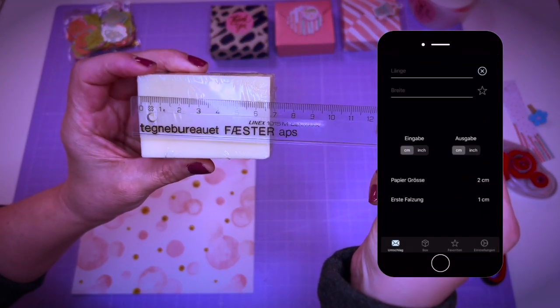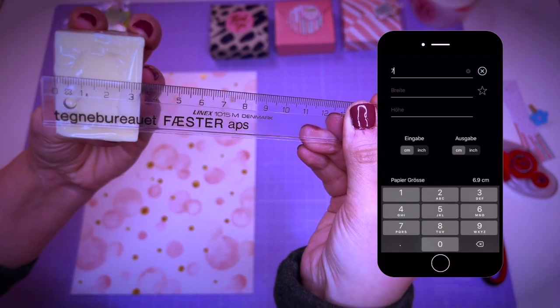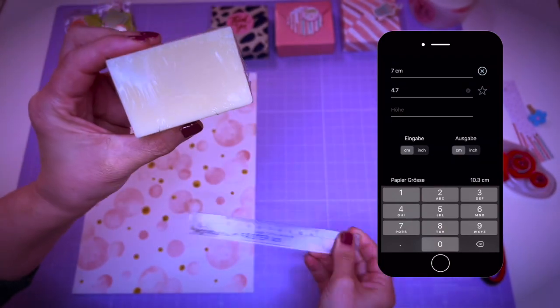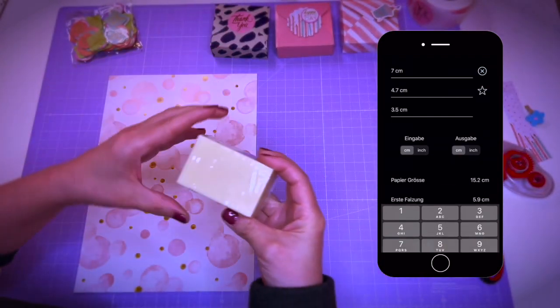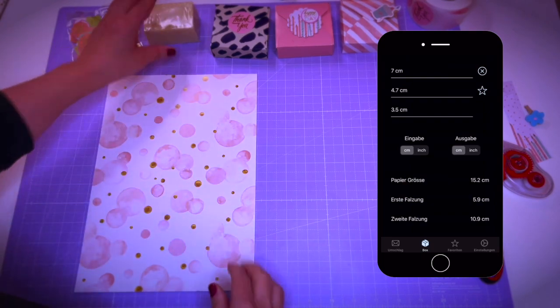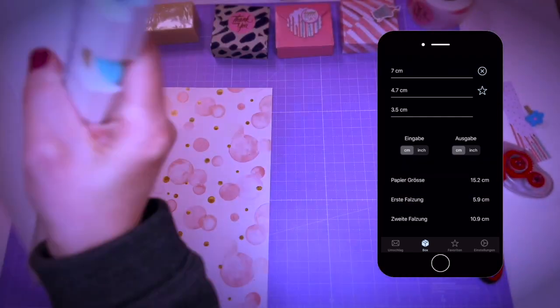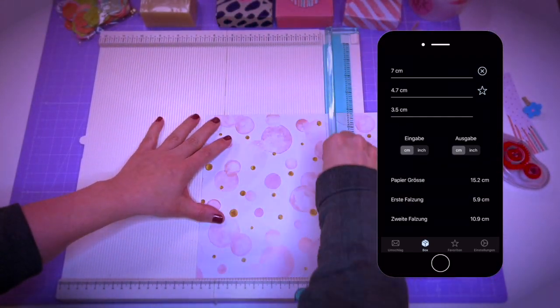So I convert the measurements in my app again. And this is what I get. So I repeat the same procedure with the new measurements. Very easy and very fun to make.